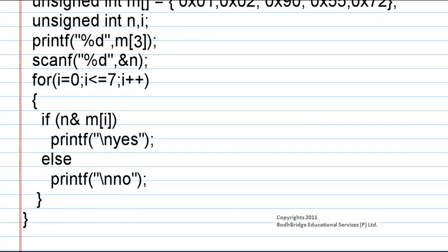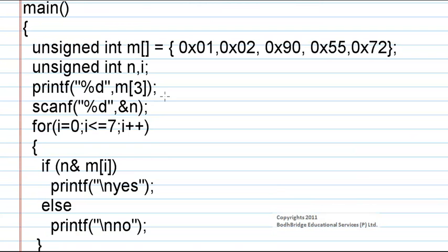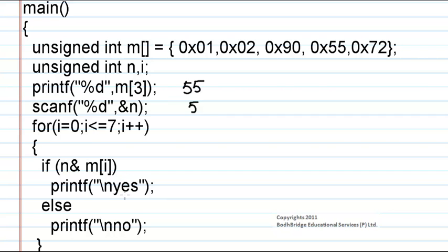Now we have to find the output of this program. m[3] — that is, the third index in array m — holds the value 55, so 55 will be printed and we have to enter a number. Let us say 5. Within the loop, the bitwise operation will take place between 5 and each of these numbers, and the corresponding result will decide which printf statement is executed.